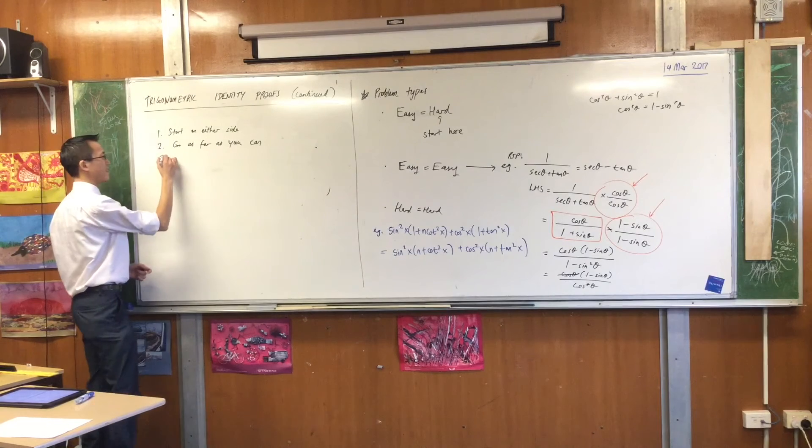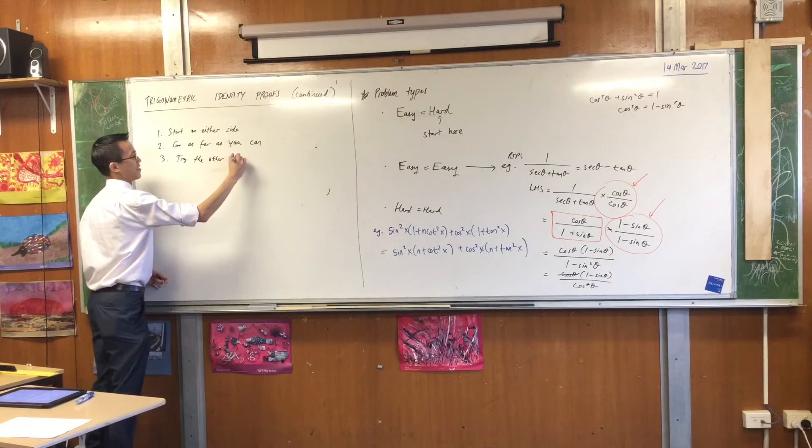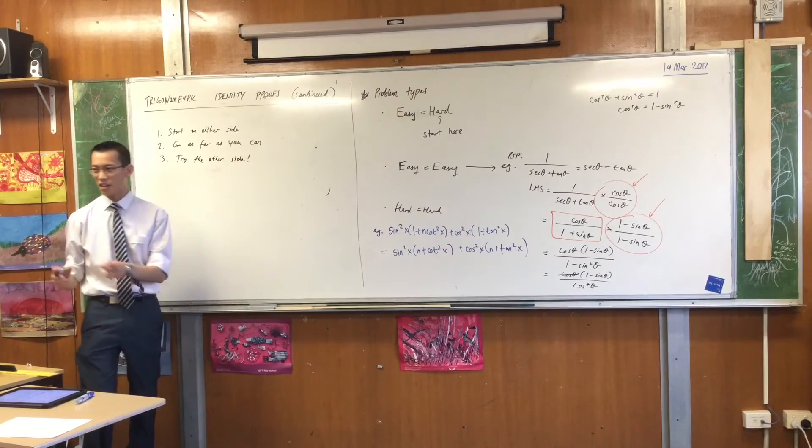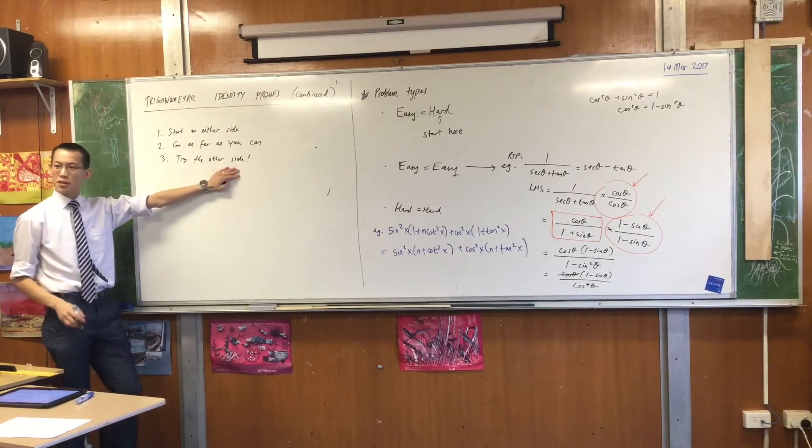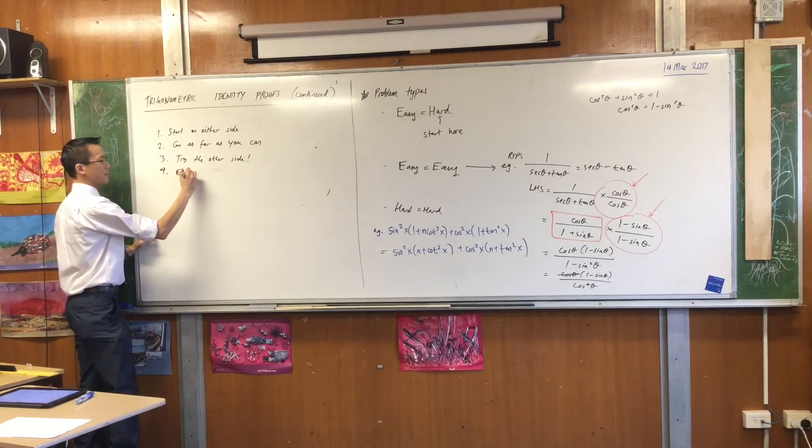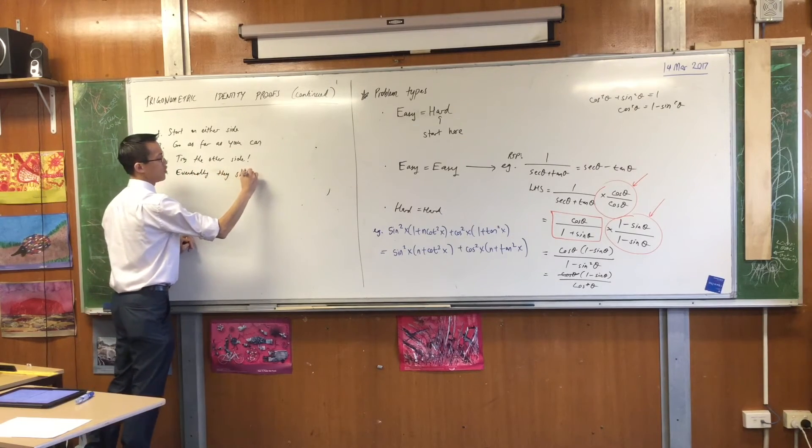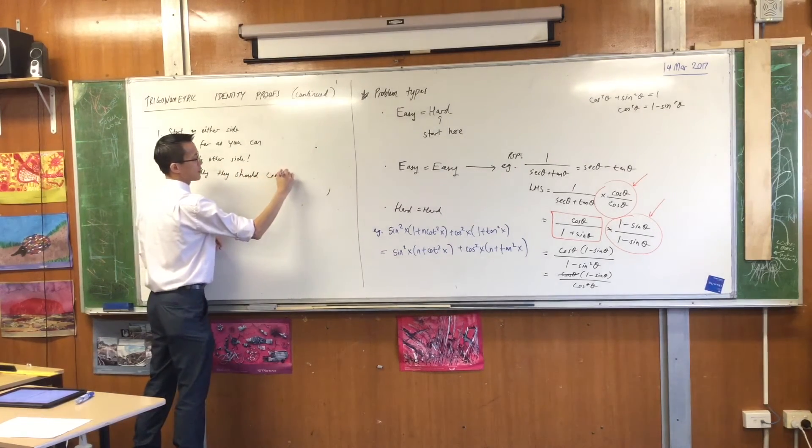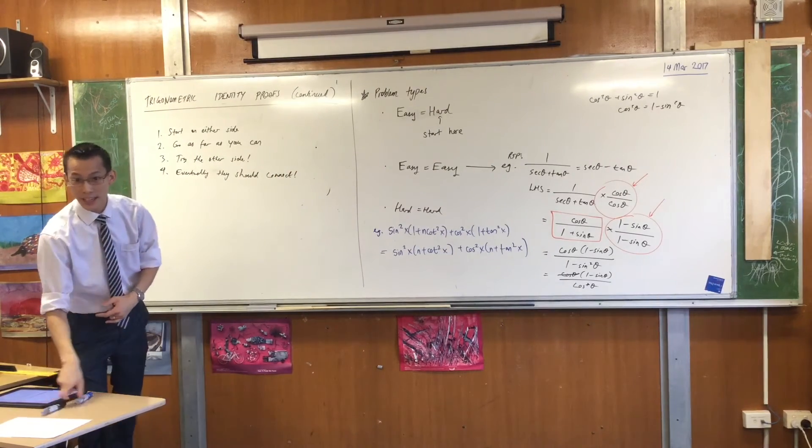Then after that, try the other side. Now, I'm going to give a proviso on this. You're not finished yet. Presumably, if the other side is also hard, you will start to simplify. And eventually, they should connect. You should get exactly the same thing on both sides. That's not solved. No, no, no, you're right. So, here's what I mean. Here's what my proof would actually look like. I'd like you to write this just underneath.